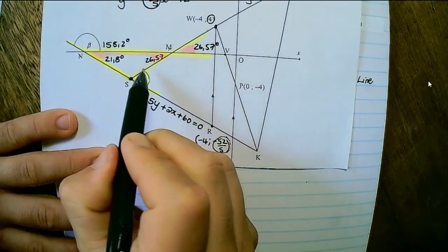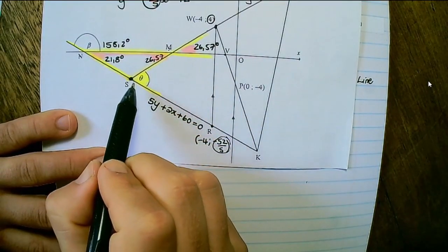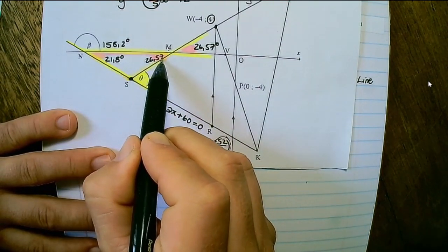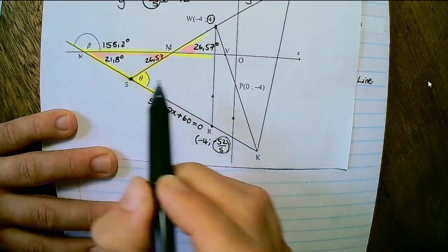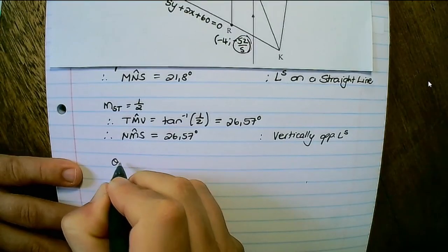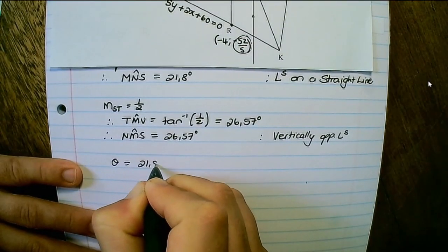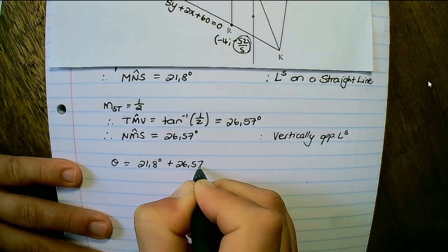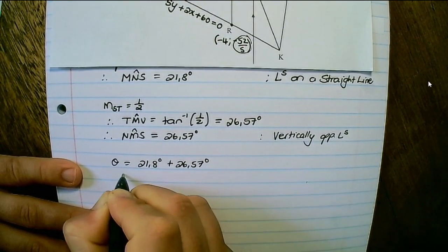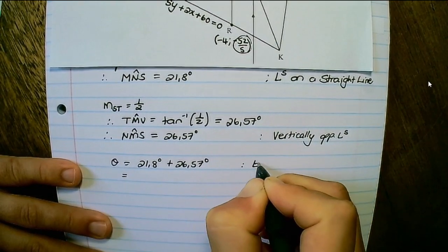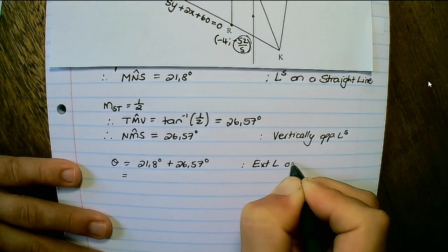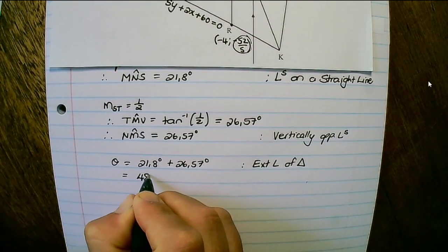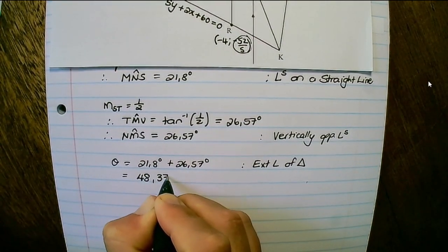Now we can find theta. Theta equals 21.8 degrees plus 26.57 degrees, by the exterior angle of a triangle theorem, which gives theta equals 48.37 degrees.